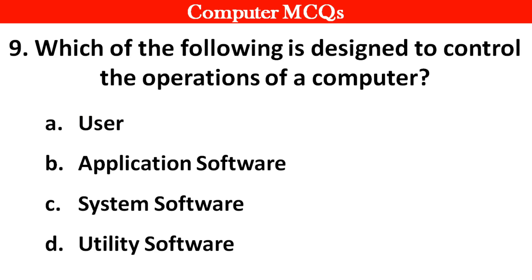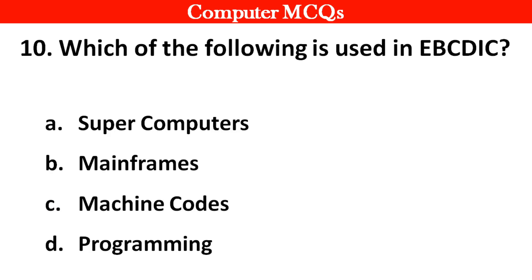Next question. Which of the following is designed to control the operations of a computer? Options A: User, B: Application software, C: System software, D: Utility software. Right answer is option C: System software.